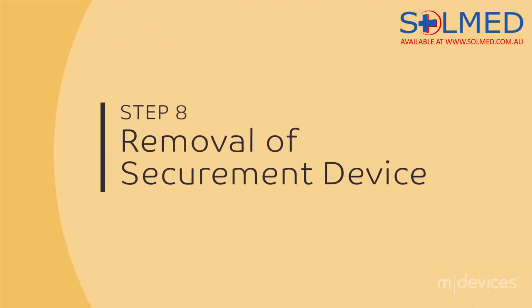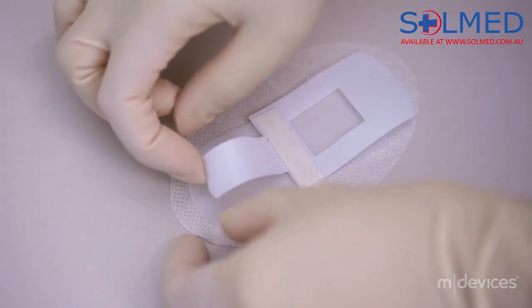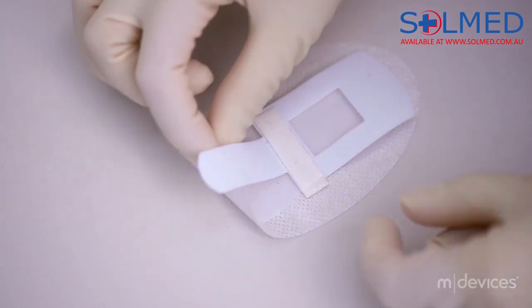Step 8: To remove the universal securement device, gently lift one edge of the dressing and slowly peel away from the skin.